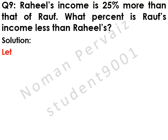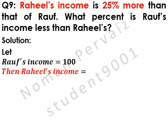Let Raouf's income be equal to 100. Then Raheel's income is 25% more than Raouf, so we write 125.